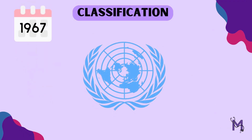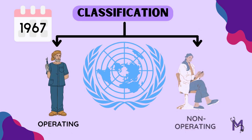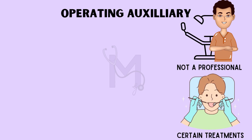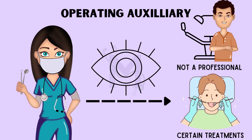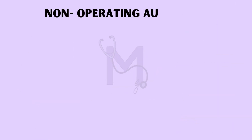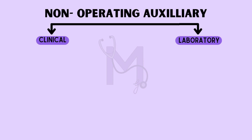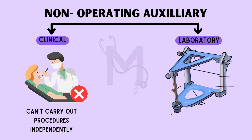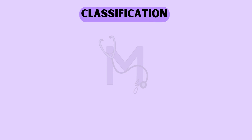In the year 1967, the World Health Organization classified dental auxiliaries into operating and non-operating types. An operating auxiliary was a person who, although not a professional, is permitted to carry out certain treatment procedures in the mouth, only under the direct supervision of a professional. The non-operating auxiliary was further classified into the clinical and laboratory type. While a clinical auxiliary assists the dentist in their clinical work but was not allowed to carry out procedures independently, a laboratory auxiliary assists the dentist by carrying out certain necessary technical laboratory work.